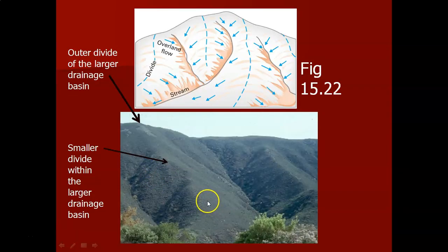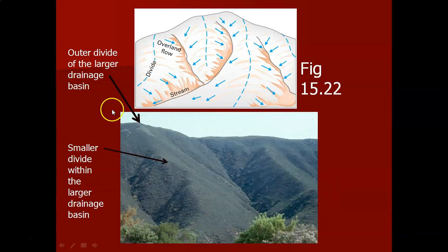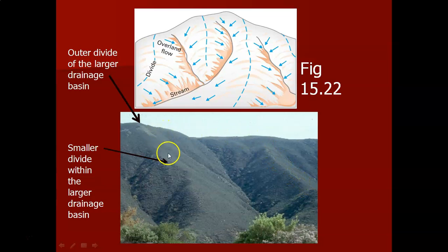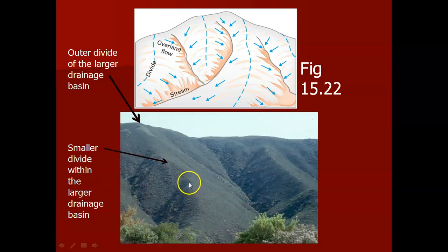Here's a small-scale example. I took this picture out in California, driving in the main river valley. You can actually see the outer divide of the main drainage basin, and then you can identify smaller drainage basins within it. You can see this hill crest — this is the divide here. Taking the outer divide and an inner divide, we've just created a drainage basin for one tributary.